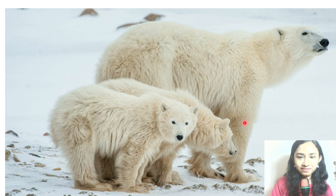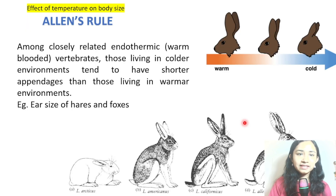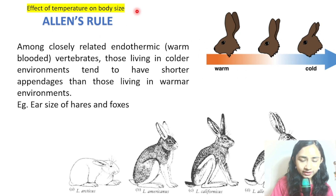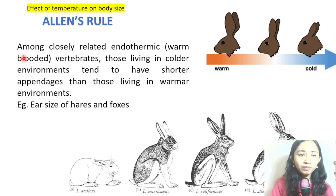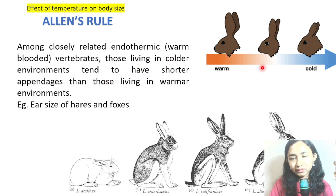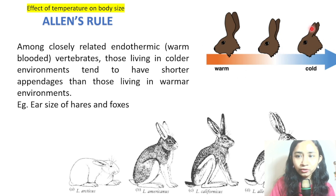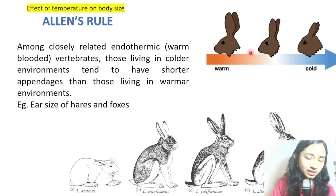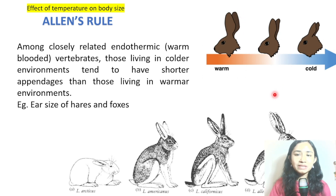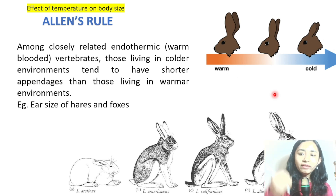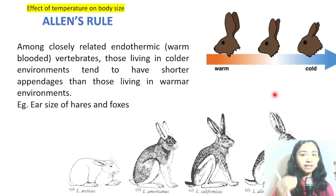The next rule is Allen's Rule, which is again dependent on the effect of temperature on body size. Among closely related endotherms — warm-blooded vertebrates — those living in colder environments tend to have shorter appendages than those in warmer environments. Here you can see rabbits with shorter appendages in cold climates and larger appendages in warm climates. In cold temperature, animals show very less appendage exposure, giving a lower surface area to volume ratio, which helps retain body heat.